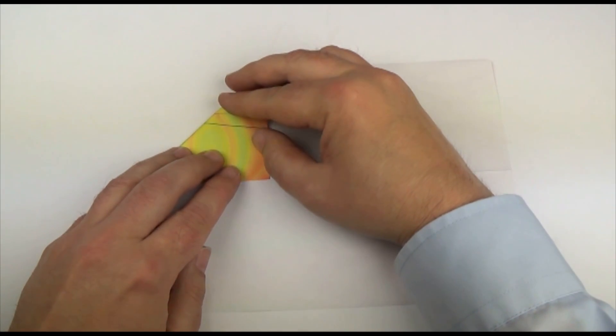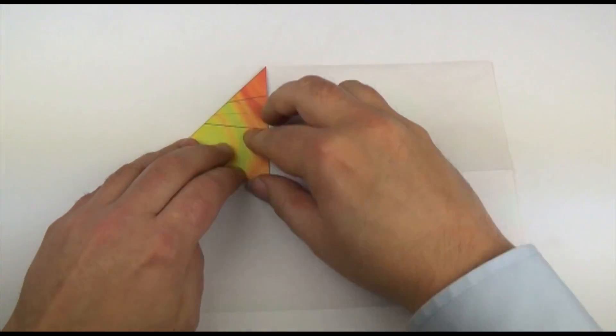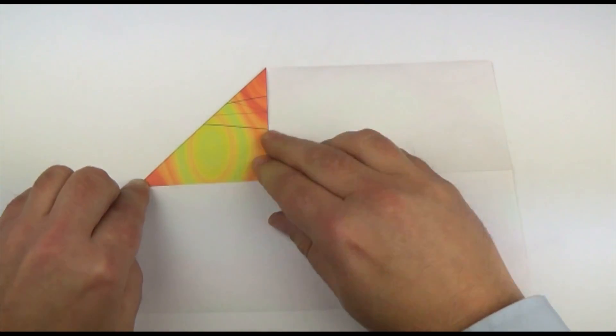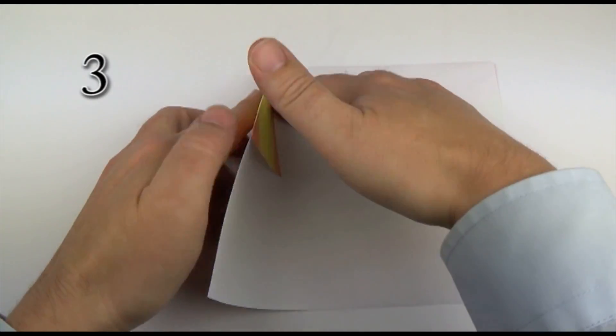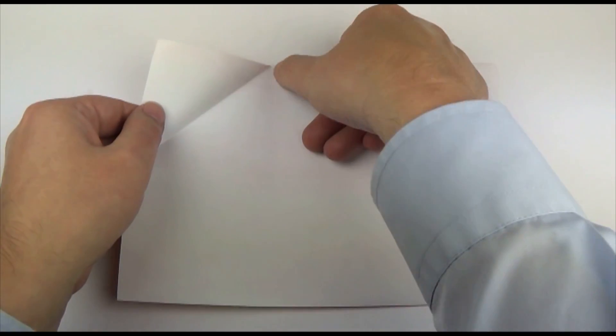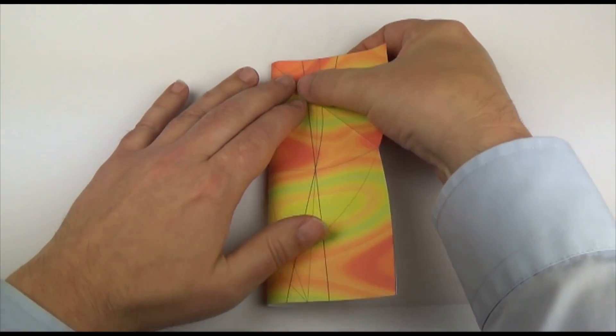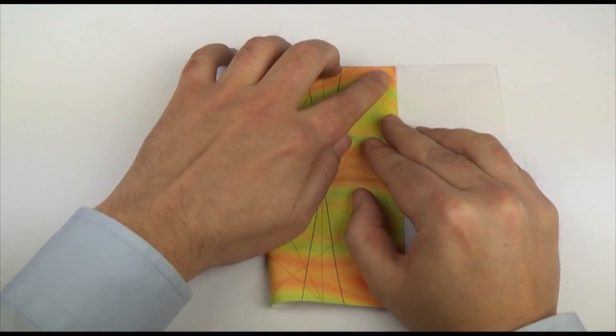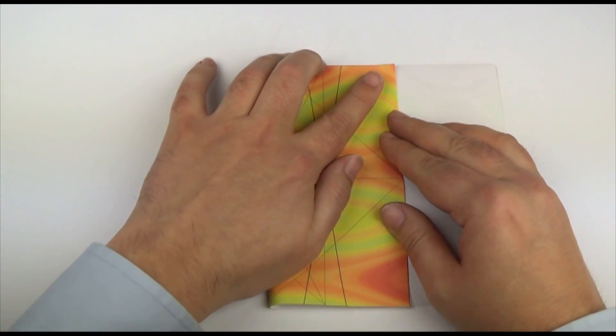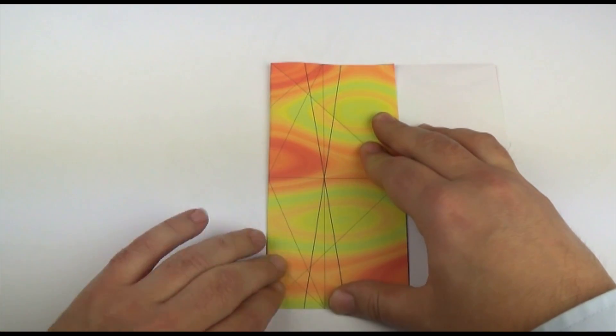It's going to be a guide to a fold we're going to make next. I'm going to fold over at that point, making a fold perpendicular to the edge and crease.